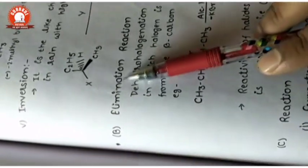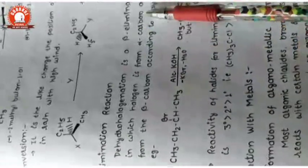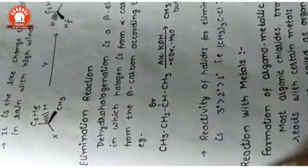The next reaction type is elimination reaction. As the name suggests, something is eliminated from the reactant. This is also covered in Class 11 as a method of preparation of alkenes. It is called dehydrohalogenation or beta elimination. The reagent used is alcoholic KOH, or alcoholic NaOH, or sodamide, or potassium amide. Dehydrohalogenation means removal of hydrogen and halogen.